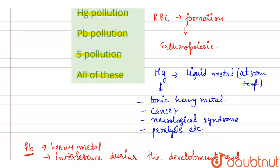Also, we see S pollution, that is sulfur. Sulfur is a non-metal element which is an important element because it is found in amino acids such as cysteine and methionine, which are equally important for polypeptide chains and proteins. But it does not cause interference in the production or formation of RBC. So the correct answer is lead pollution, the second option.